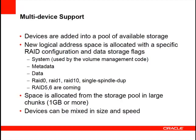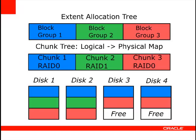BtrFS includes support for multiple devices. We have a pool of available storage, and new logical address spaces are allocated out of that pool with a specific RAID configuration — RAID 0, RAID 1, or RAID 10 — and a specific use, whether metadata or data. RAID 5 and RAID 6 support is in the works. We allocate from the storage pool in relatively large chunks of about one gigabyte or more, and this allows us to mix devices together in size and speed.